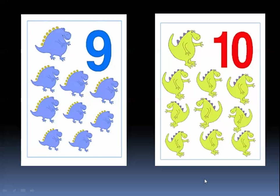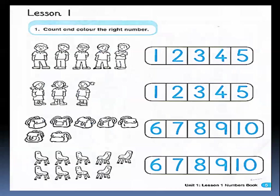Let's go through some activities on numbers. Let's start the first exercise. In this exercise we will count the pictures and circle the correct number. What are these? These are boys. Let's count these boys: one, two, three, four, five. These are five boys. Let's circle number five. Yes, this is number five.